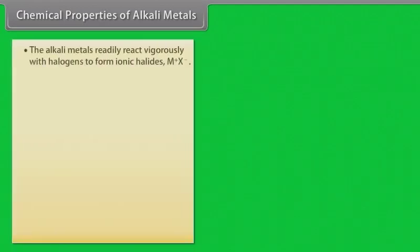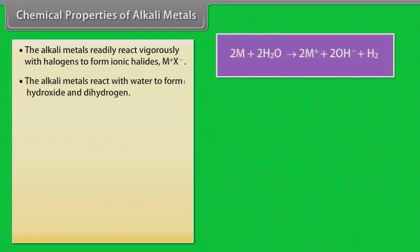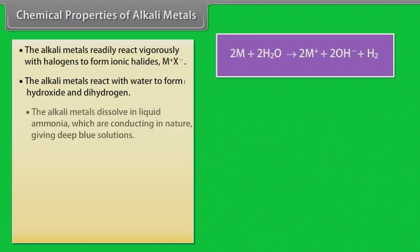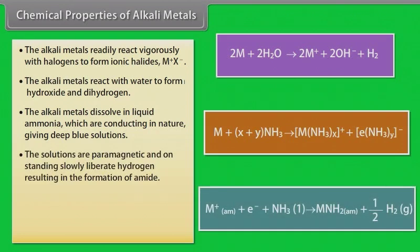Chemical properties of alkali metals. The alkali metals readily react vigorously with halogens to form ionic halides M⁺X⁻. The alkali metals react with water to form hydroxide and dihydrogen. The alkali metals dissolve in liquid ammonia, giving deep blue conducting solutions. The solutions are paramagnetic and on standing, slowly liberate hydrogen, resulting in the formation of amide.